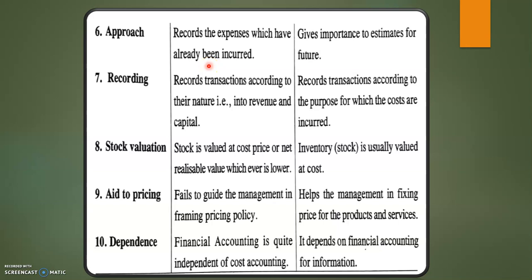What is the approach? Financial accounting always follows a past approach — we record what has already happened. Cost accounting uses a future approach: estimates, tenders, quotations. For one particular construction activity, one cost record is maintained. Future estimates and tender quotations are prepared in cost accounting.